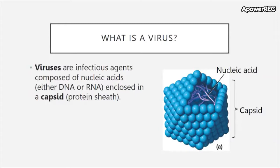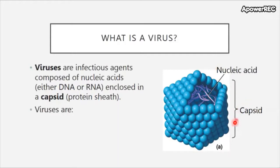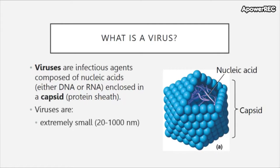So what is a virus? Viruses are infectious agents composed of nucleic acids, which can be in the form of DNA or RNA, and are enclosed in a capsid, which is a protein sheath. As you can see in this image, the nucleic acid is on the inside of the capsid, which houses and protects the nucleic acids. Because viruses lack many components of cellular machinery, they are extremely small.